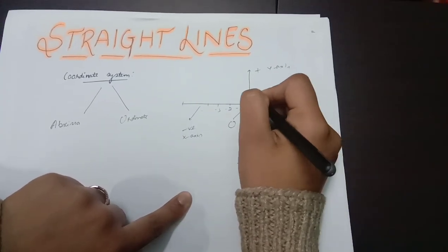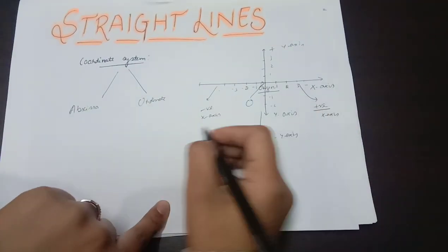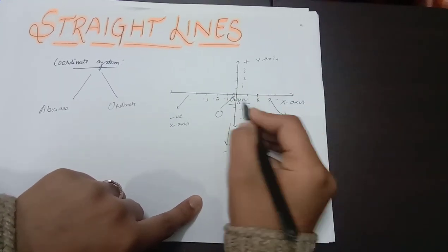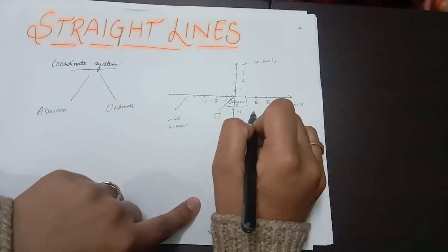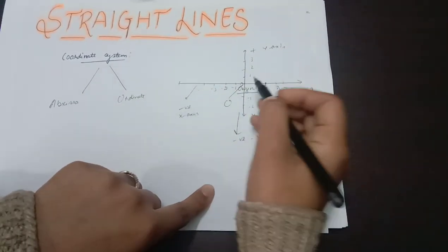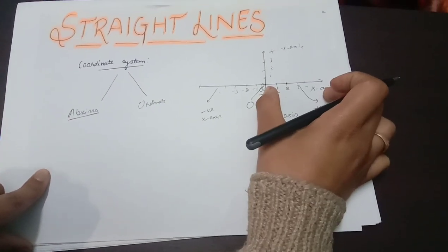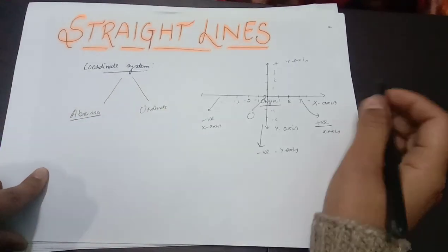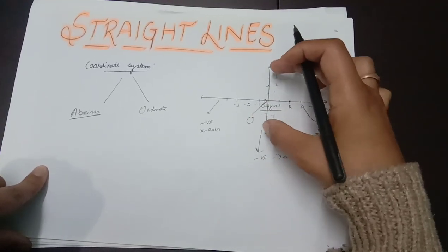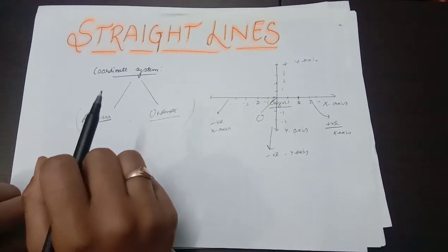Similarly, for the positive y-axis: 1, 2, 3, and so on; and minus 1, minus 2, and so on. Now suppose I have a point on the positive x-axis at 2 — that point is the abscissa. If I have a point on the y-axis, we call it the ordinate. When we combine these two, it becomes a proper coordinate system.